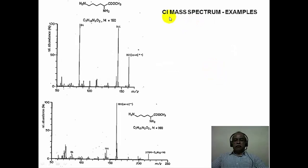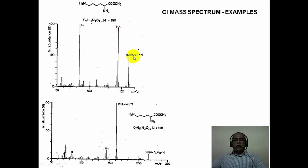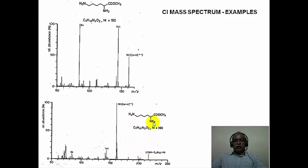These are chemical ionization mass spectral studies of a particular amino acid that does not give a molecular ion peak when electron impact ionization is used. When methane is used as reagent gas, the molecular ion peak at 161 is clearly seen — the molecular weight is 160, and what is registered is 161, the M+H⁺ protonated species. When isobutane is used as the reagent gas, not only the protonated species but also the tertiary butylated substrate is formed, with the peak at 217 corresponding to the substrate plus the tertiary butyl cation adduct.